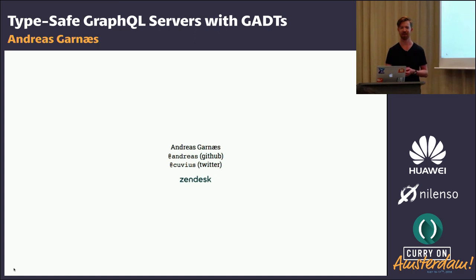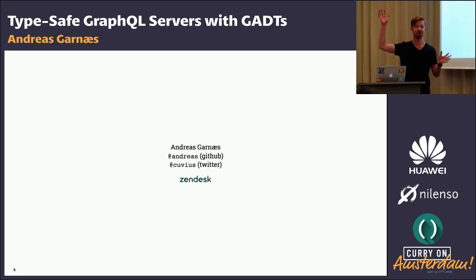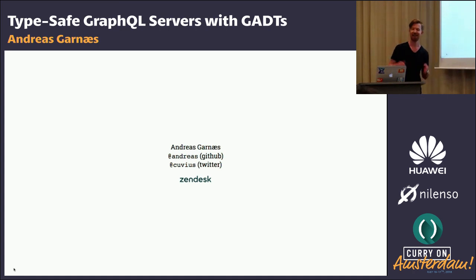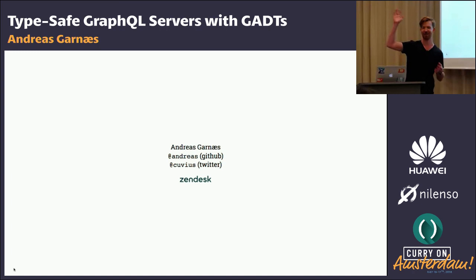Before we begin, I just want to get a bit of a sense of the room. How many people are familiar with GraphQL already? Quite a number of people — that's impressive. And how many are already familiar with a statically typed functional language like OCaml, Haskell, Scala, or F#? This is going to be great.